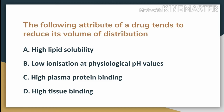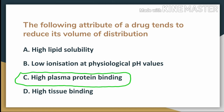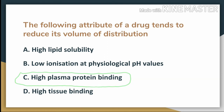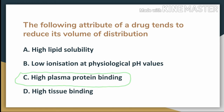The answer is option C — high plasma protein binding. As we know, volume of distribution is inversely proportional to plasma protein binding. So if plasma protein binding is high, the drug will remain only in the plasma and the volume of distribution will be low.